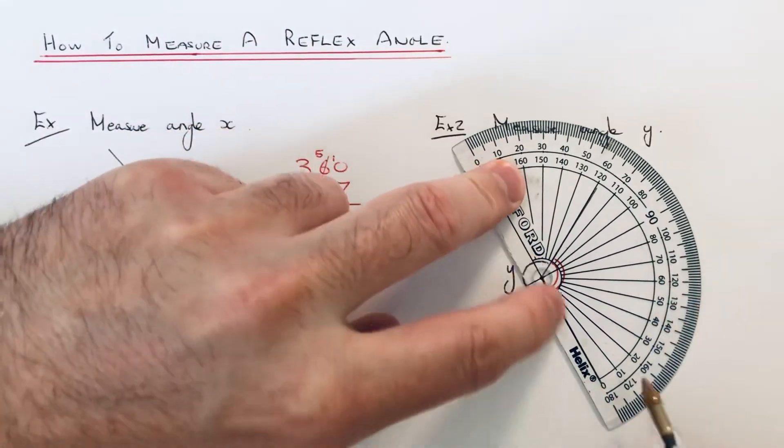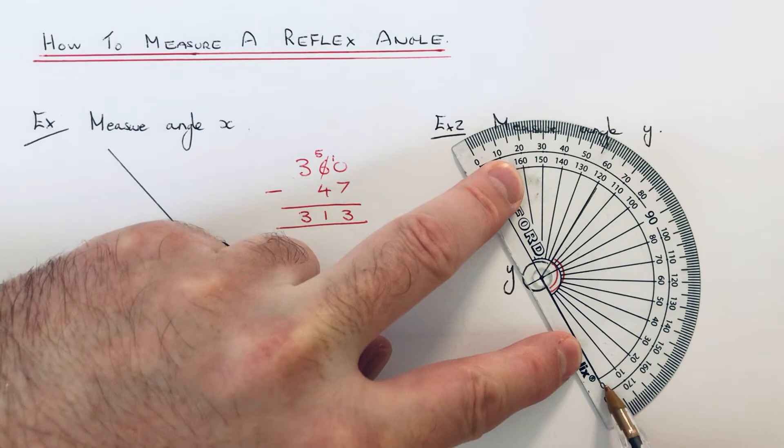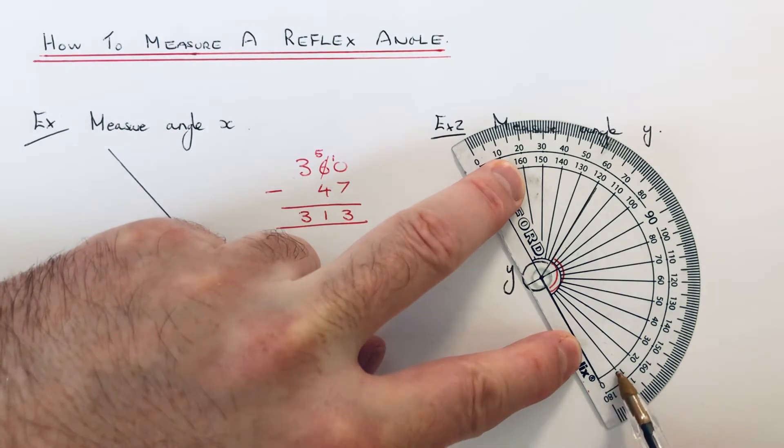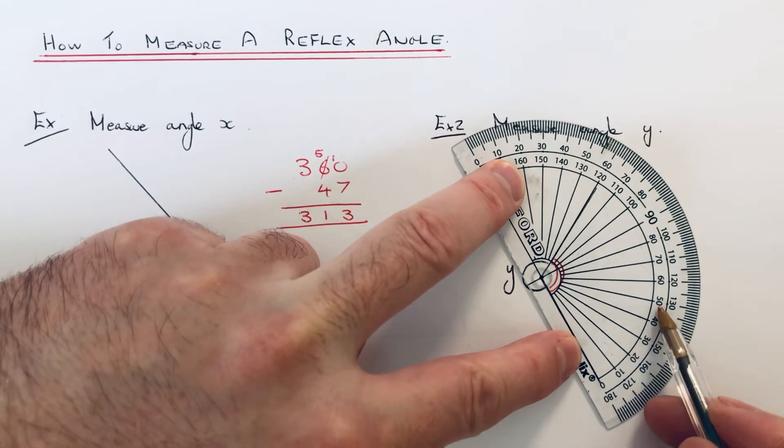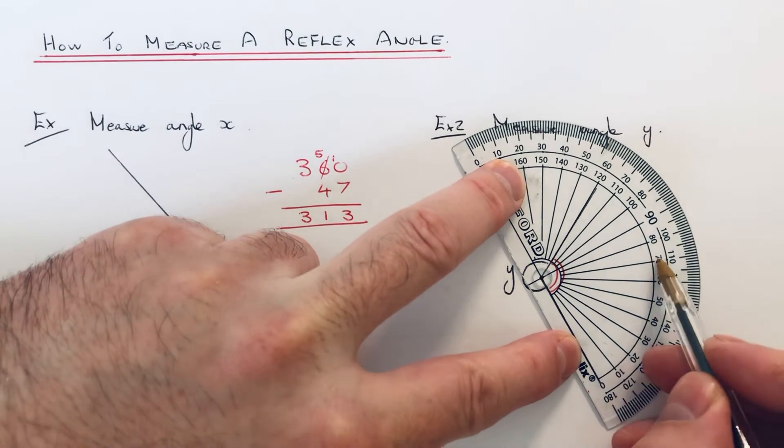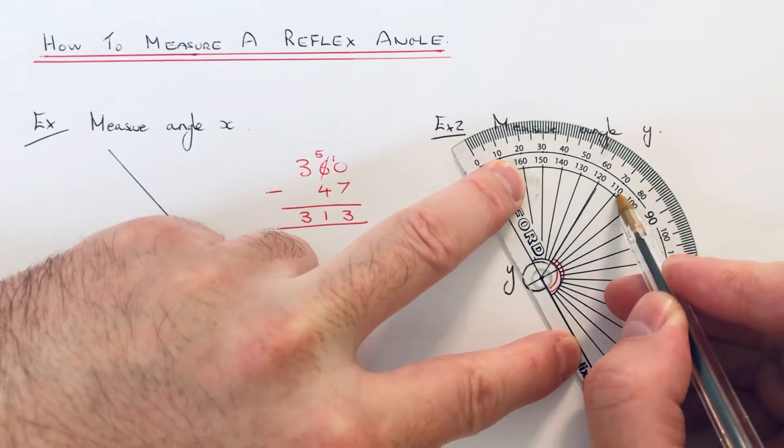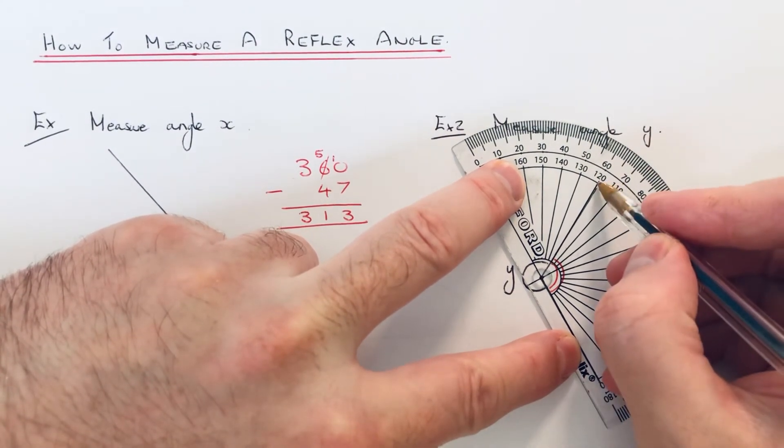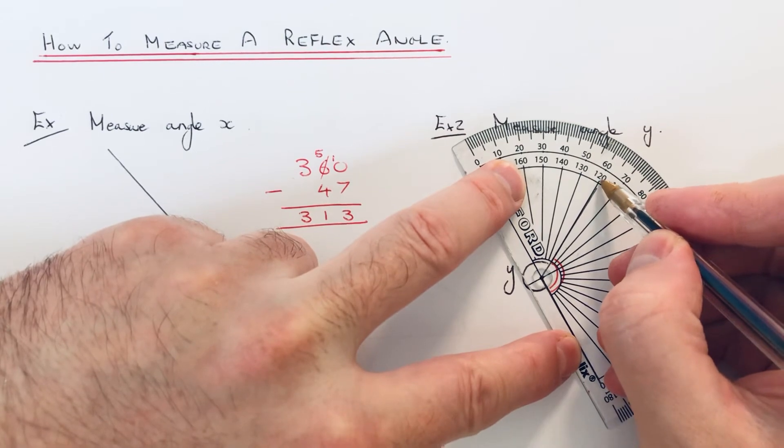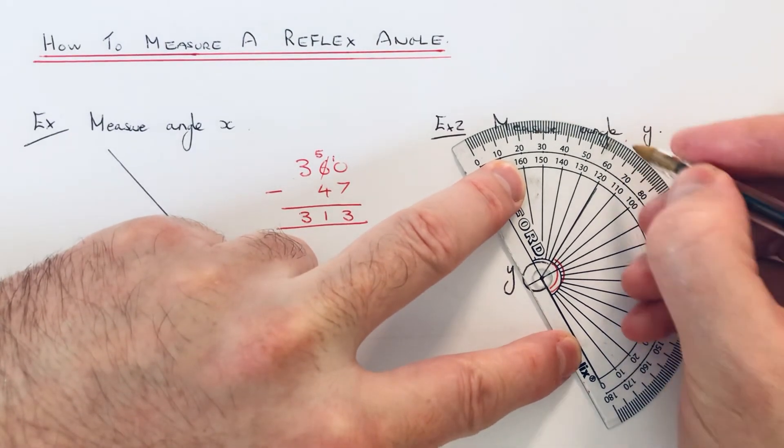So this time we've got the inside zero on the line, so we go 10, 20, 30, 40, 50, 60, 70, 80, 90, 100, 110, and I think it's just a fraction before 120, so it's going to be 119.